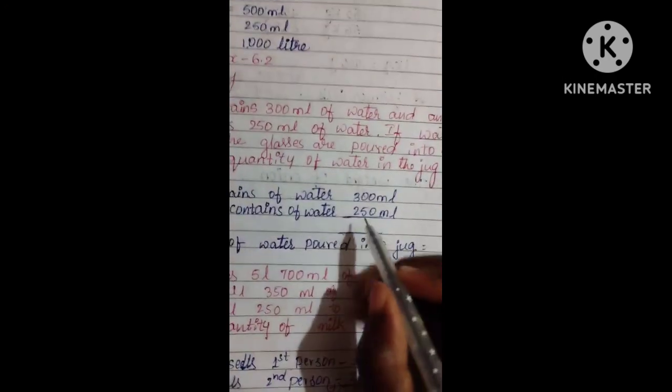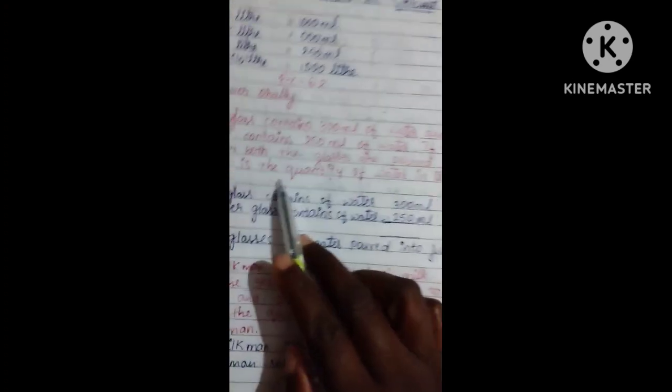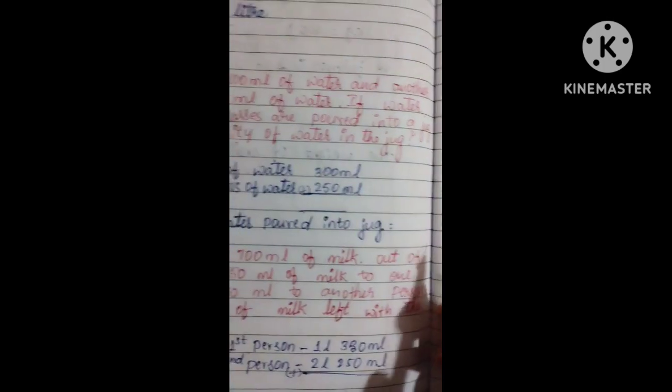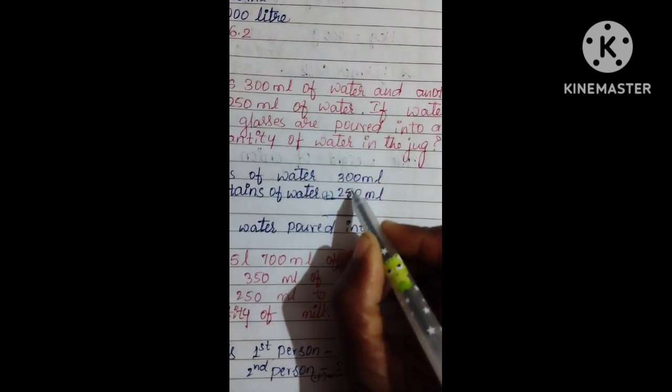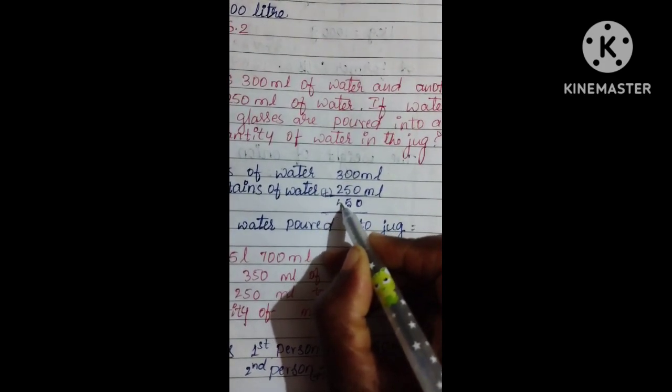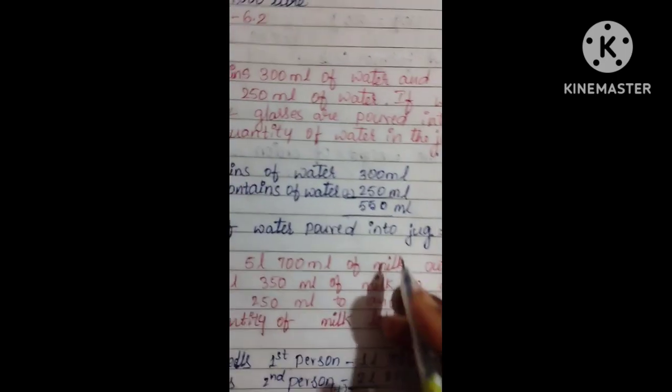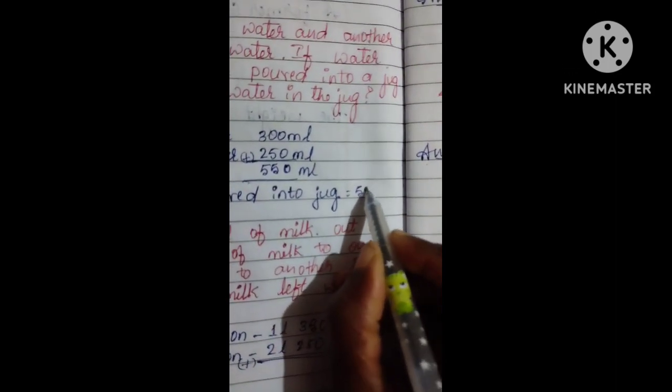You want to know the total volume. What is the quantity of water in the jug? 0 plus 0 is 0, 0 plus 5 is 5, 2 plus 3 is 5. So the answer is 550 ml.